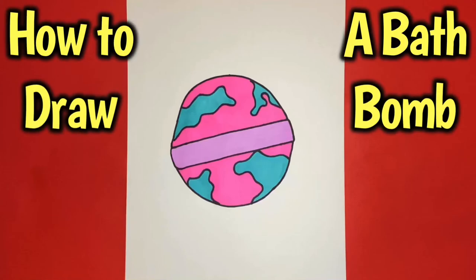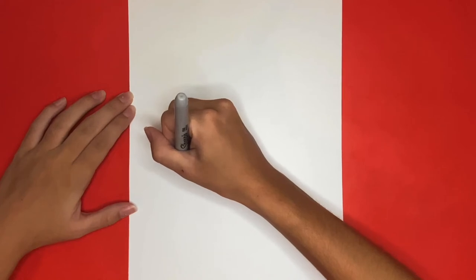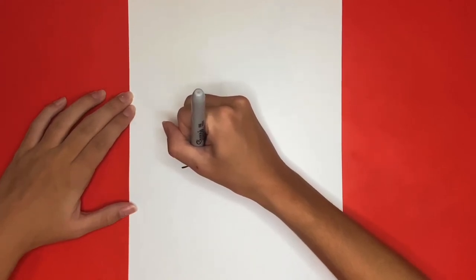How to draw a bath bomb. We are going to start by drawing a diagonal line across the middle of our page.